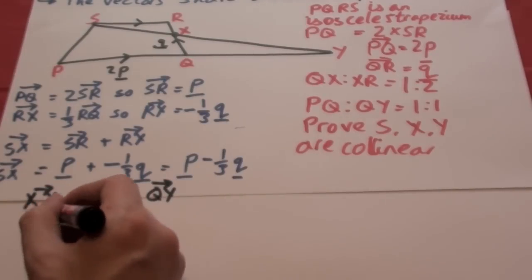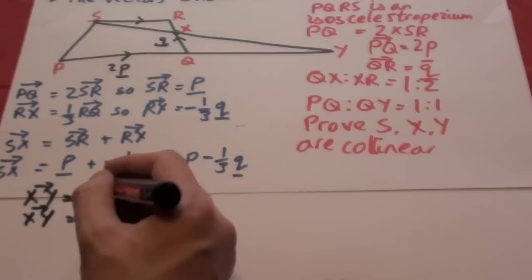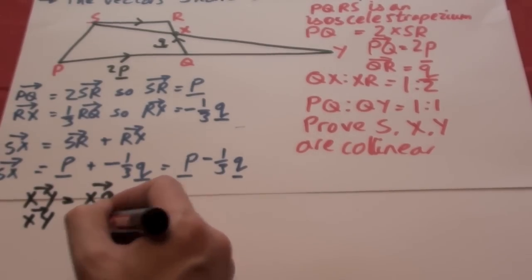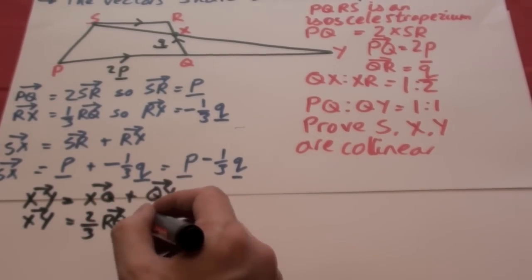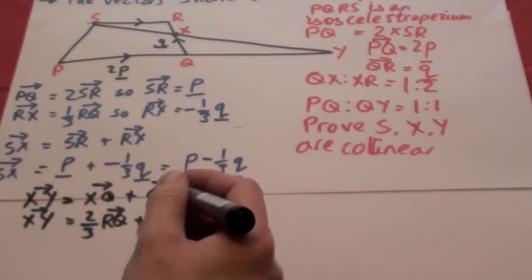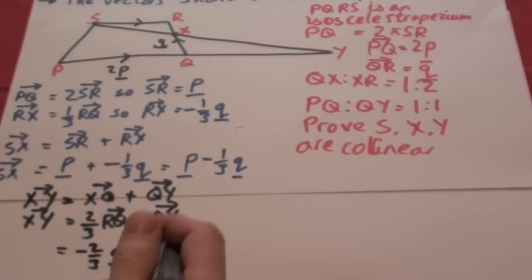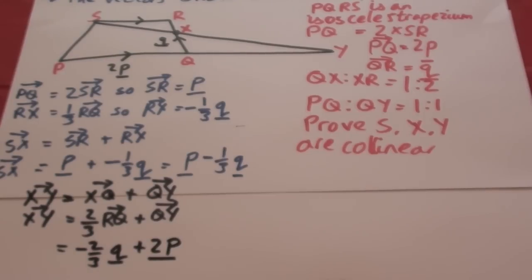Q to Y is the same as P to Q because it's in the same ratio. So it's going to be 2P. But Q to X is two thirds of Q. So it's two thirds of RQ. Now RQ is going in the opposite direction of the vector Q. So it's got to be two thirds minus Q. And then we have our two P as we go from Q to Y.